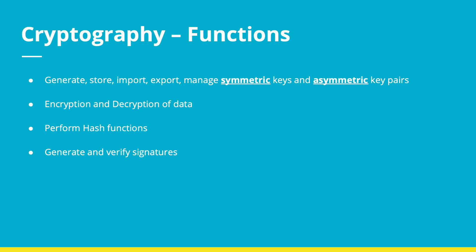In cryptography, if you break down the various functions involved, first things first are to generate, store, import, and export symmetric and asymmetric key pairs. Keys are a very important aspect of it and how we generate and store them is a very important function. The second function is encryption and decryption of data. And there are hash functions, and generation and verification of signatures to be done. This is a very small list of the various cryptographic functions; it does not cover different types of encryption mechanisms. This is a very high-level, 20,000-feet view of the functions involved.